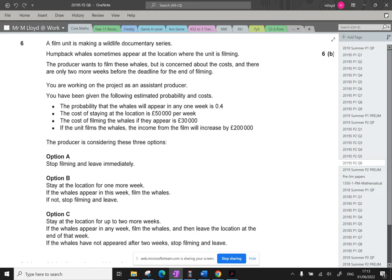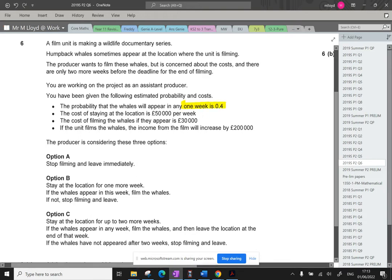So these are the probabilities. The probability that the whales will appear in any one week is 0.4. The cost of staying at the location is £50,000 per week. The cost of filming the whales if they appear is £30,000, and if the unit films the whales, the income will increase by £200,000. So the producers are considering these three options.